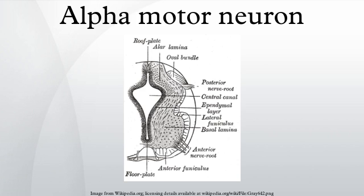While their cell bodies are found in the central nervous system, alpha motor neurons are also considered part of the somatic nervous system, a branch of the peripheral nervous system, because their axons extend into the periphery to innervate skeletal muscles. An alpha motor neuron and the muscle fibers it innervates form a motor unit. A motor neuron pool contains the cell bodies of all the alpha motor neurons involved in contracting a single muscle.